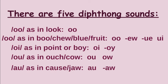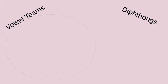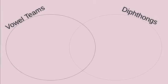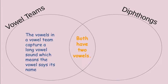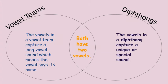My last diphthong sound is AW as in cause or jaw. AU is going to come at the beginning or the middle of a word, and AW will come at the end of the word or the syllable. So, vowel teams versus diphthongs: I'm going to see two vowels in both situations. But vowel teams capture a long vowel sound, which means the vowel is saying its name — I, A, O, E. The vowels in a diphthong capture a unique or special sound. When thinking vowel team versus diphthong, think about the sound the vowel is making.